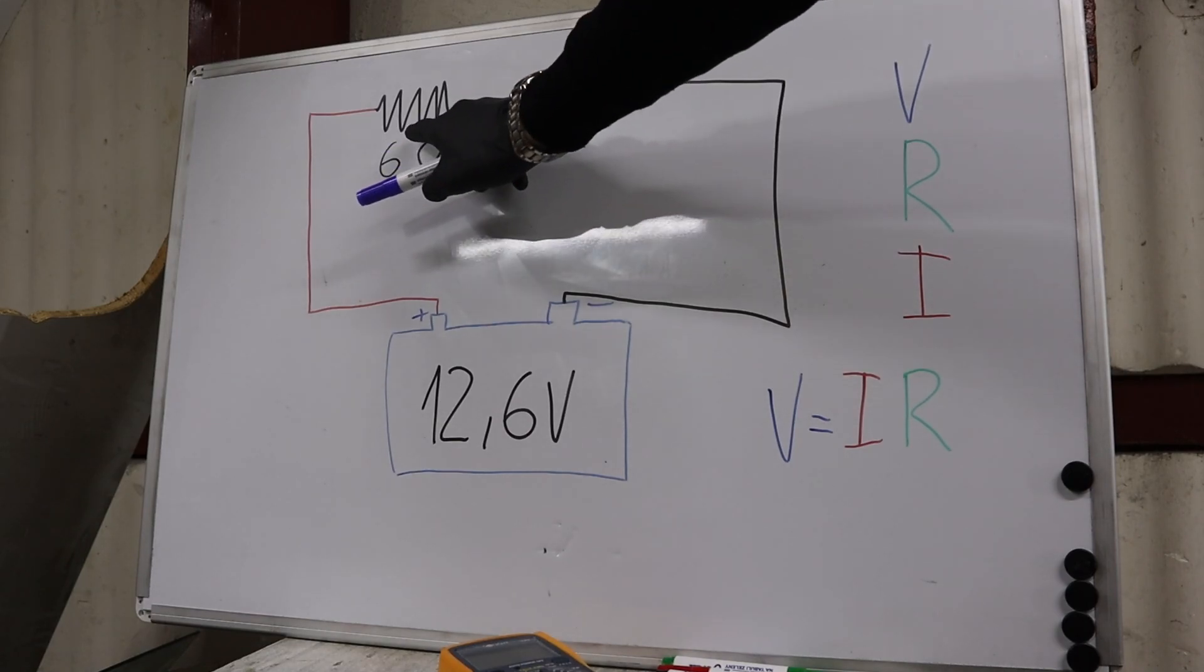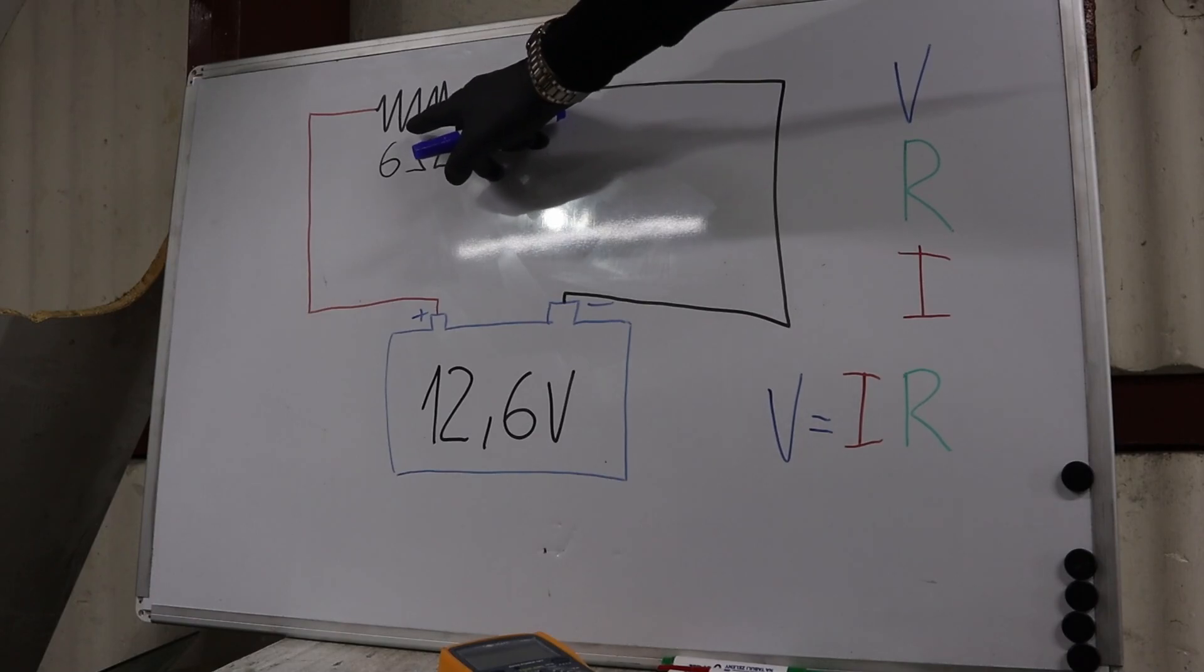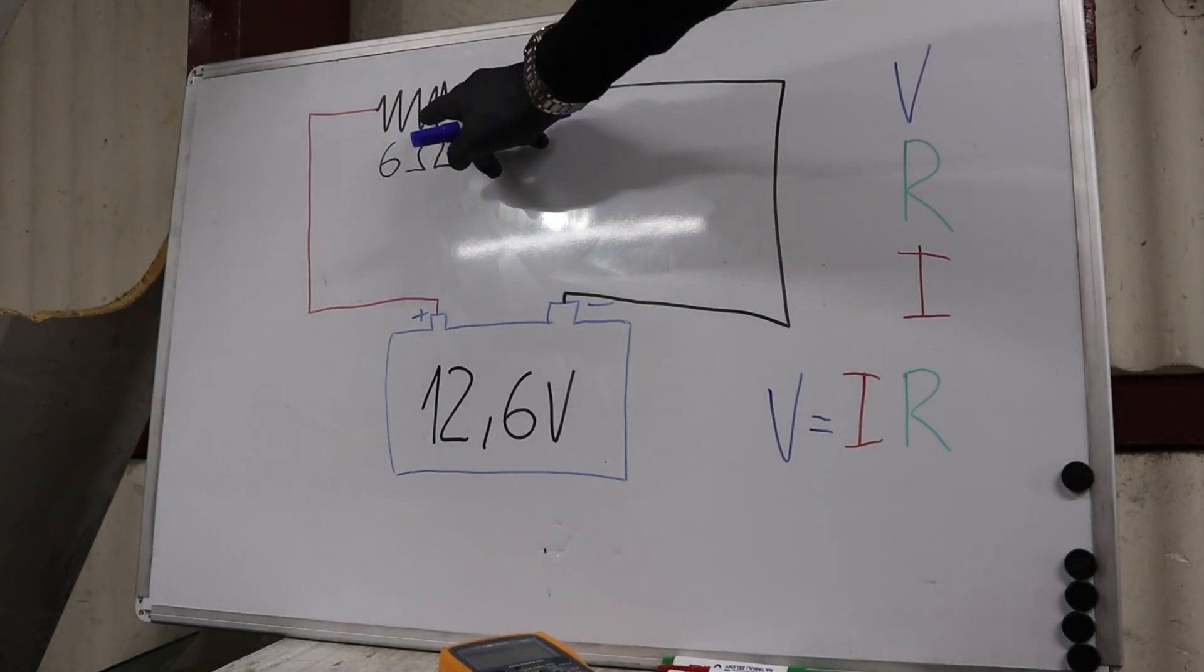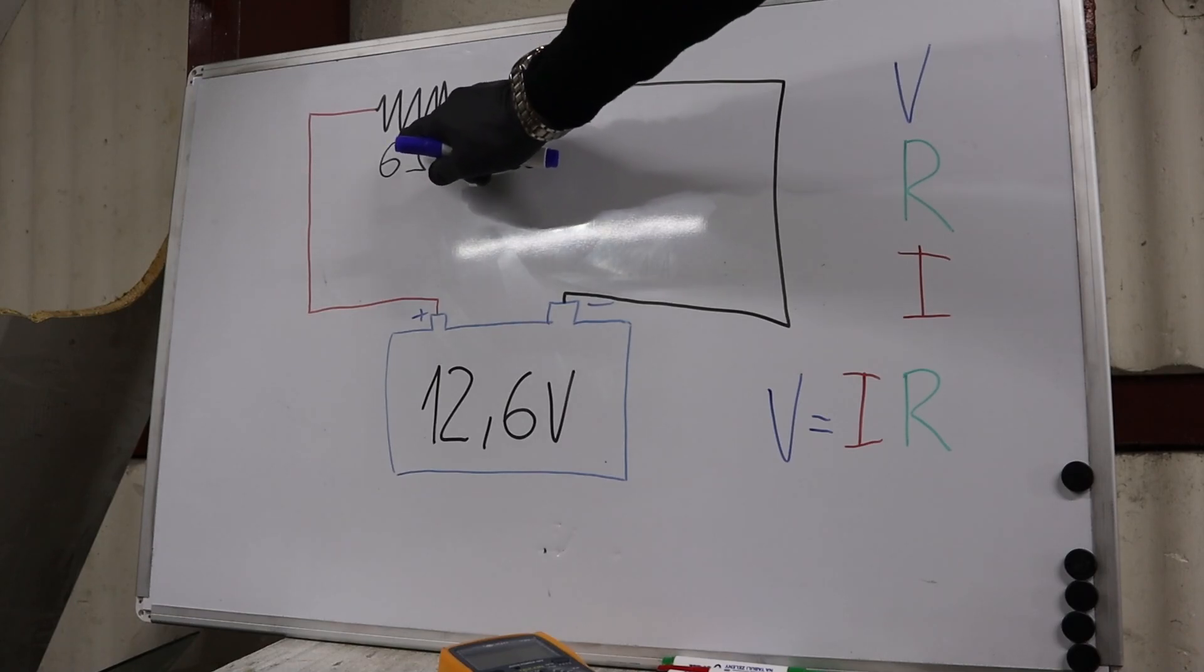Any electrical component you have connected and powered from your battery is acting as a resistor. Doesn't matter if it's a light bulb, engine fan, or any other component. Everything connected to your car battery will have at least some resistance.